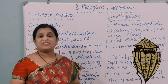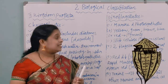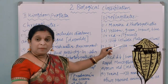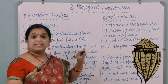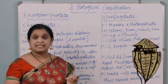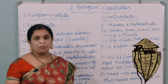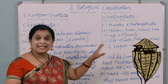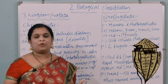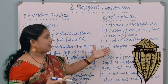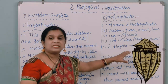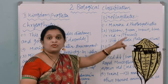Dinoflagellates consist of a cell wall made up of stiff cellulose in the form of plate-like structures. They consist of two flagella — one is longitudinally arranged and one is transversely arranged in between the cell plates of the cell wall.